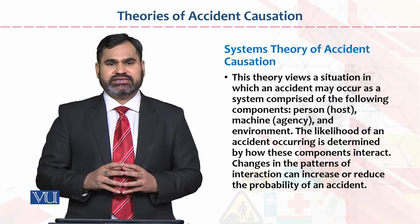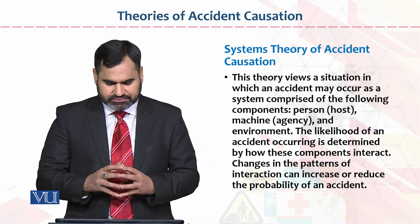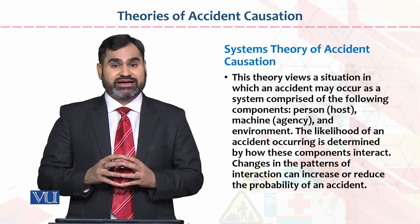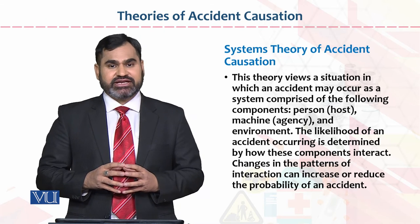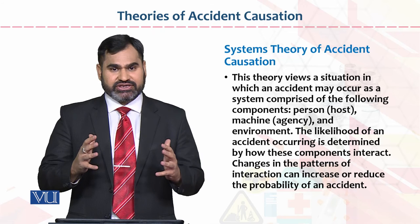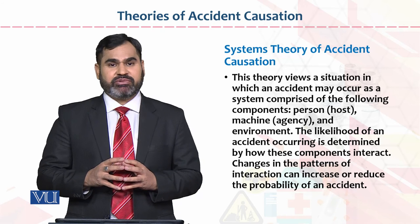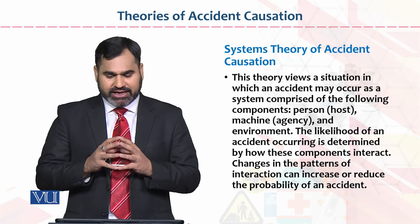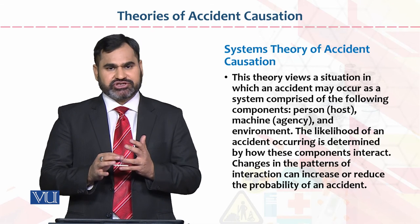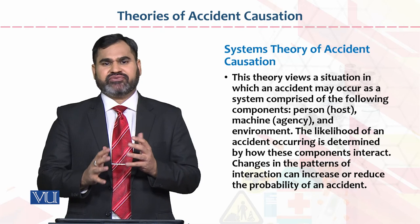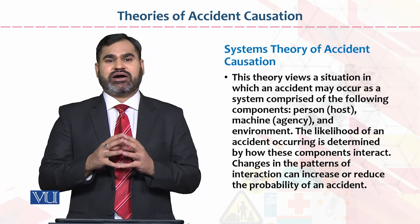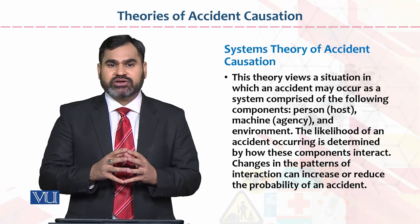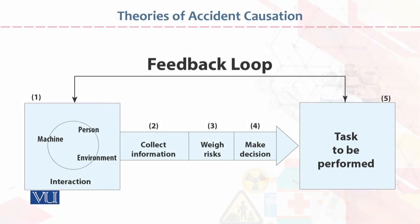The likelihood of an accident occurring is determined by how these components interact with each other. Changes in the pattern of interaction can increase or reduce the probability of an accident. In conclusion, if within an organization the individual, machinery, and environment are all in favorable conditions, the chances of accident decrease; otherwise they increase.